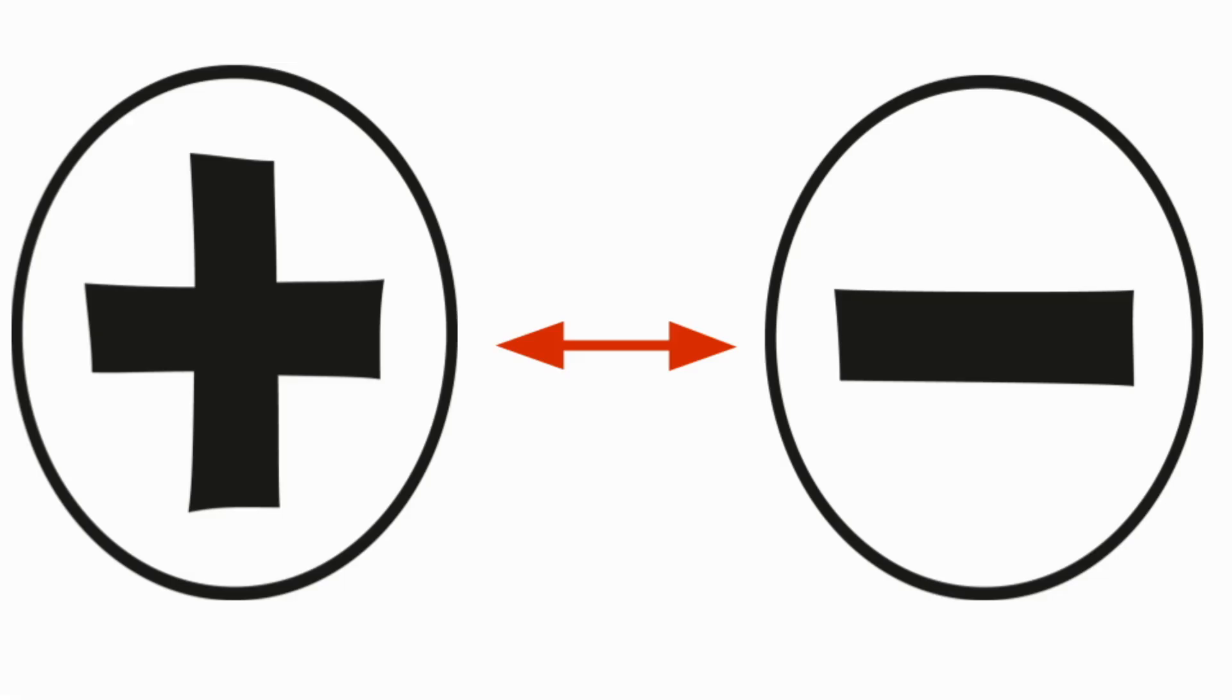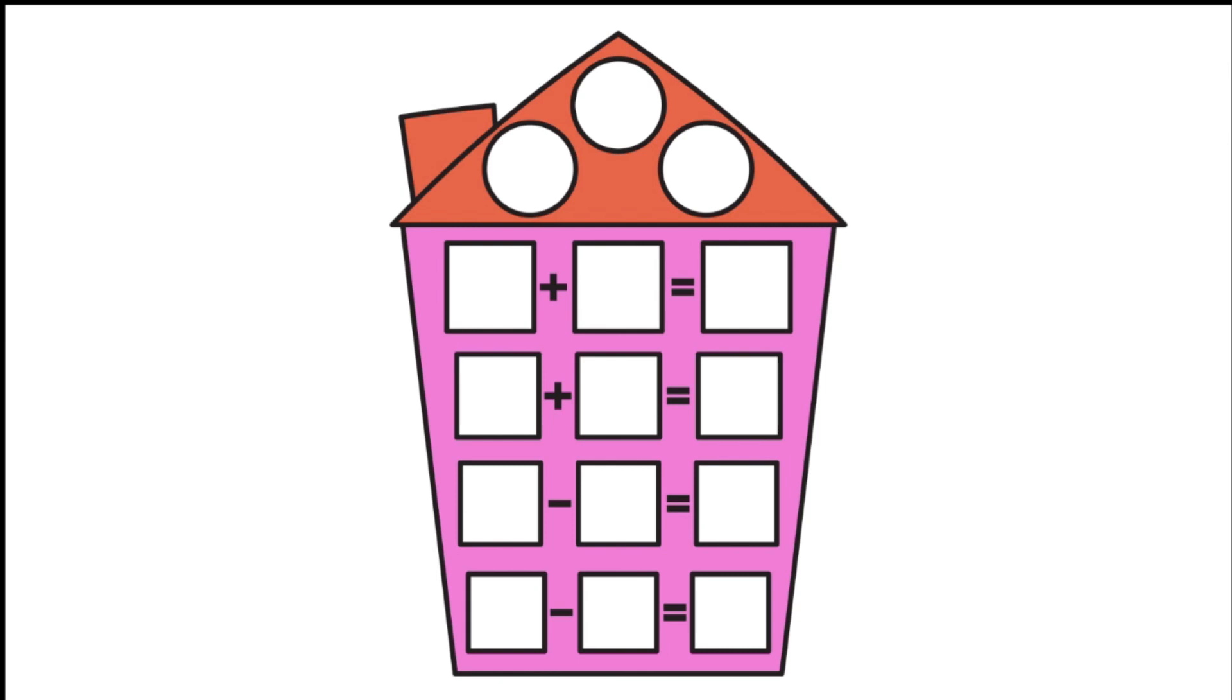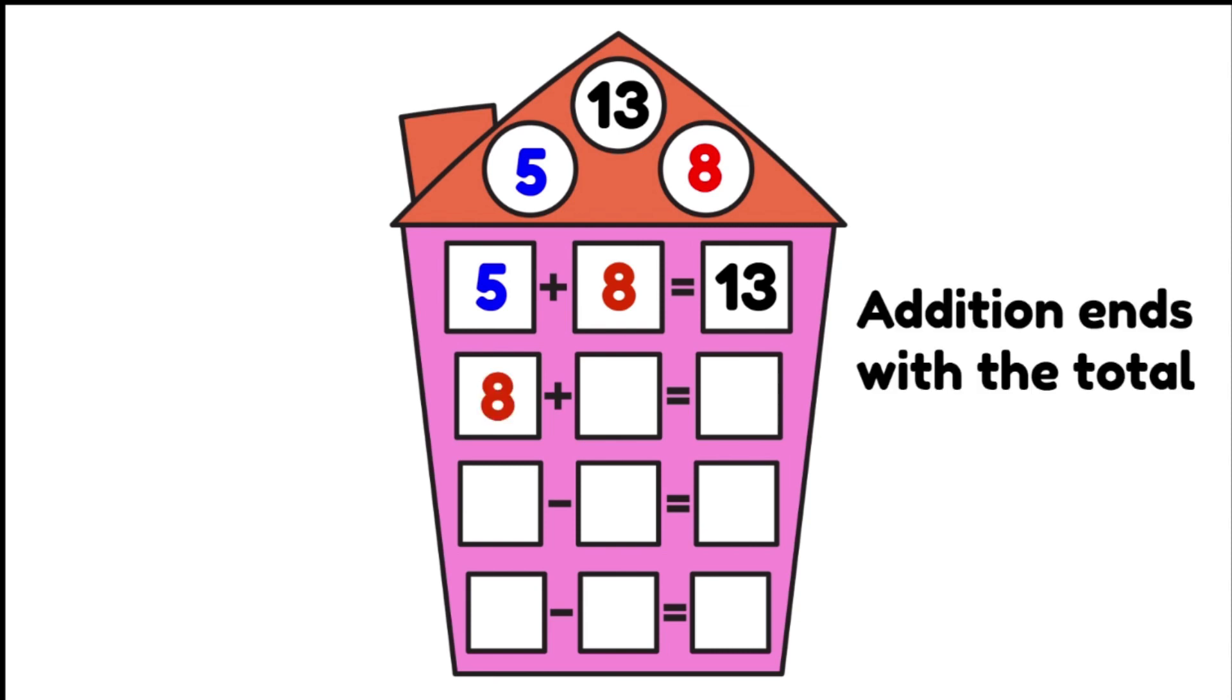Now we understand that relationship, we can start using fact families. Fact families are where you use the same numbers and just move them around within number sentences. For example, 5 plus 8 equals 13. The addition always ends with the total. Or we could say 8 plus 5 equals 13.